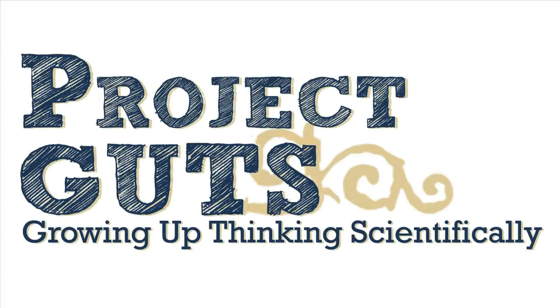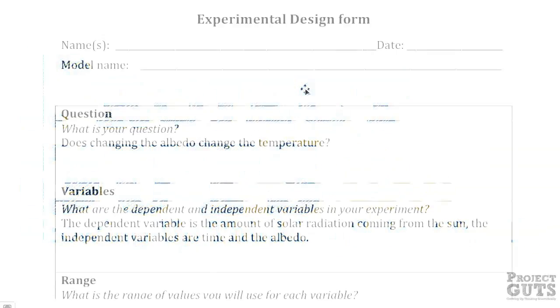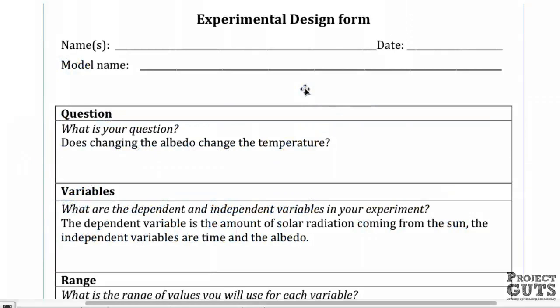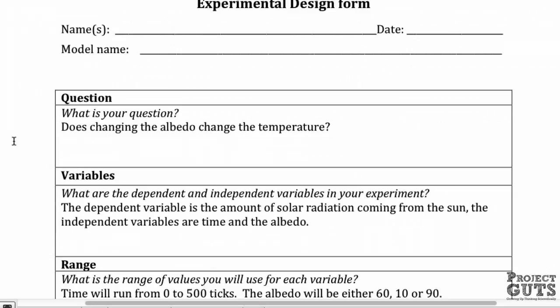I'm going to show you one way of filling out the experimental design form in order to run an experiment with the greenhouse gas base model and the albedo slider. By now you should have tried filling this out on your own, so this is just another way of filling it out. There are many different types of experiments you could run, so remember that this is just one example.